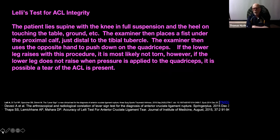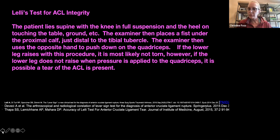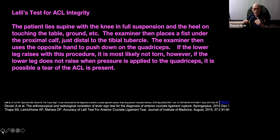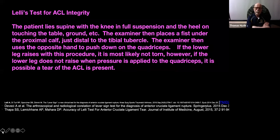Lely's test involves having the patient lie supine, and then the examiner places a fist underneath the proximal third of the gastrocnemius so that the knee is slightly bent. The examiner then takes the opposite hand — a finger or an entire hand — and pushes down on the distal quadricep. If the ACL is intact, the lower portion of the leg will raise up. In the absent ACL patient, there will be no raising up in the lower leg when this is done.